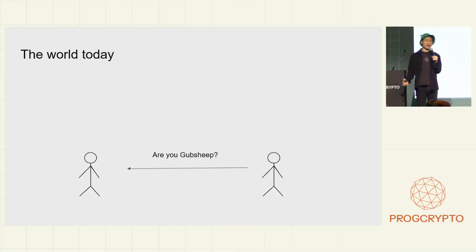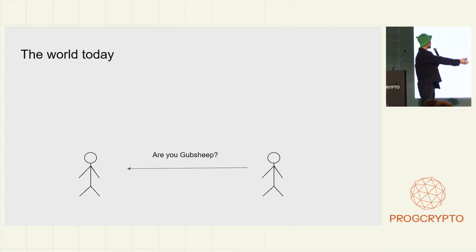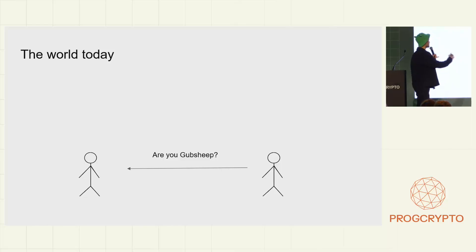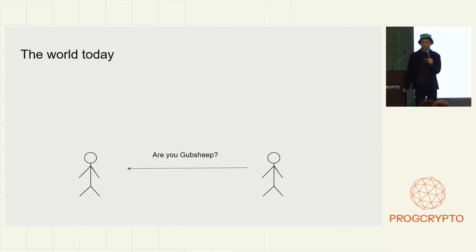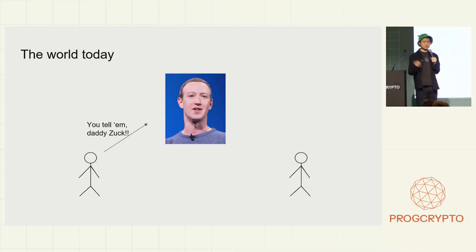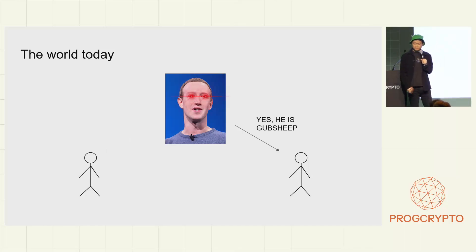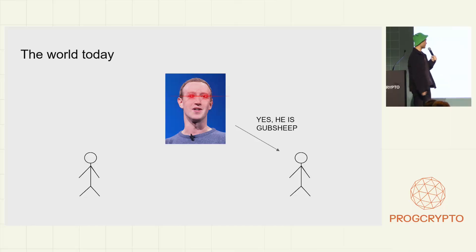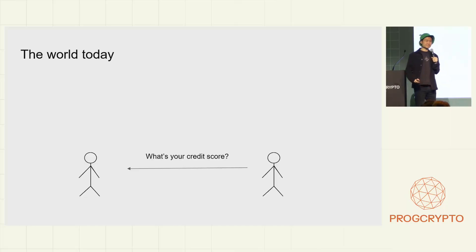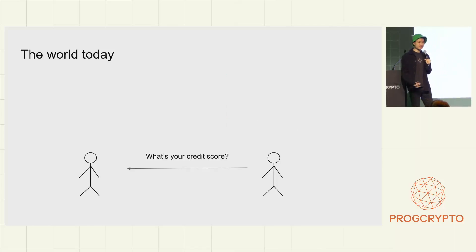Here is how this process generally works today. Suppose I've got two parties trying to pass data back and forth — this is a simplified diagram of the OAuth protocol. The person on the right is going to ask the person on the left, 'Are you gubsheep?' And then I'm going to go to some identity provider and say, 'You tell him, Daddy Zuck.' And Zuckerberg's going to say, 'Yes, he is gubsheep,' in his omnipotent robotic voice. That's a simplified sketch of how OAuth works.